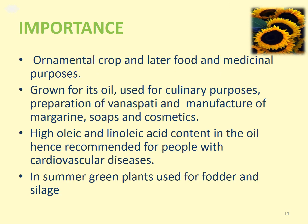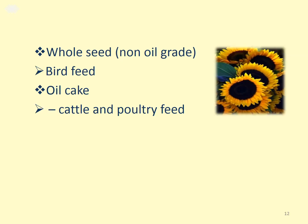Sunflower is important as an ornamental crop and later for food and medicinal purposes. It is grown for its oil, used for culinary purposes, preparation of vanaspati, and manufacture of margarines, soaps, and cosmetics. It consists of high oleic and linoleic acid content in the oil, hence recommended for people with cardiovascular disease. In summer, green plants are used for fodder and silage. The whole seed of non-oil grade can also be used as bird feed, and oil cake is prepared for cattle and poultry feed. Parched seeds can also be consumed as a condiment.